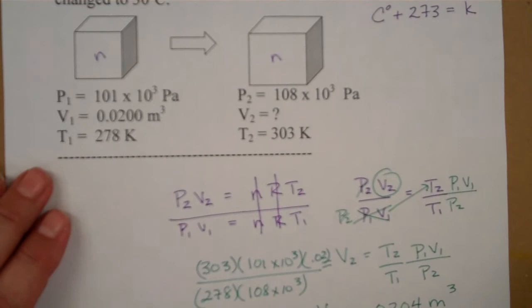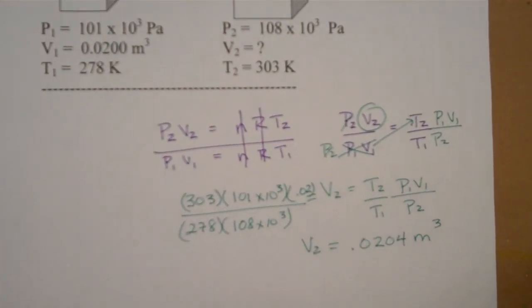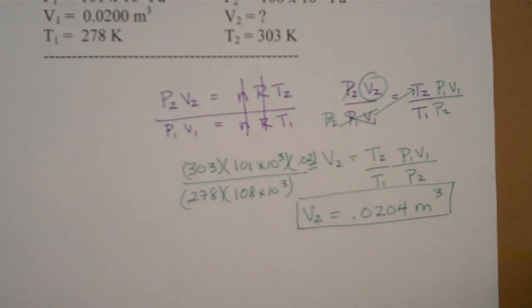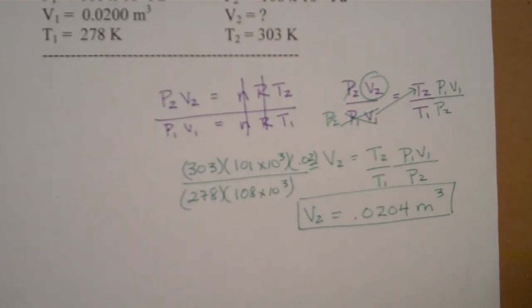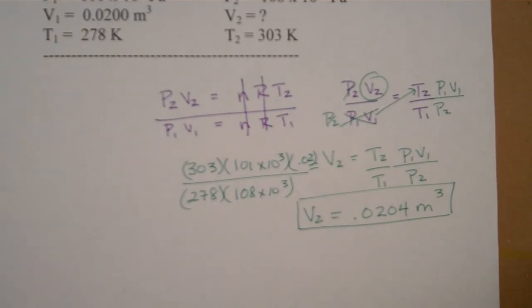And now let's see what our significant figures look like. I think we won't worry too much about that and report that our final volume is 0.0204 cubic meters. So it looks like our volume has expanded. Our temperature expanded, making the molecules move faster. Our pressure expanded, so we're hitting the sides more frequently. It looks like our volume increased as well.